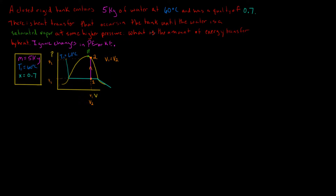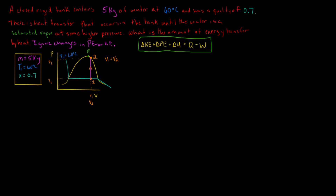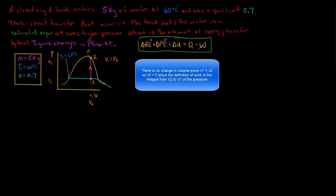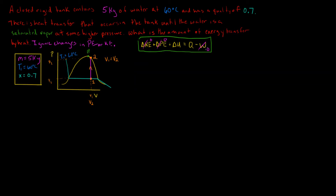The question of energy transfer by heat leads us to the energy equation: change in kinetic energy plus change in potential energy plus change in internal energy equals Q minus W. In our case, changes in kinetic and potential energy are zero because we're told to ignore them. The work W done by the system is also zero since there is no work transfer described in the problem.